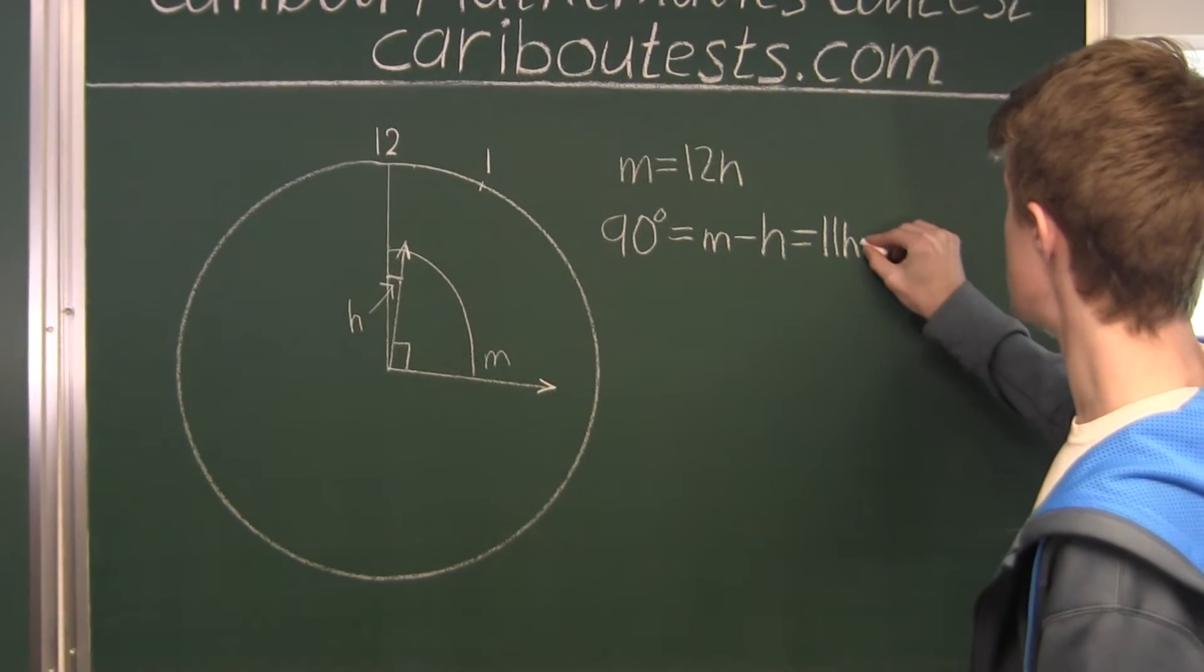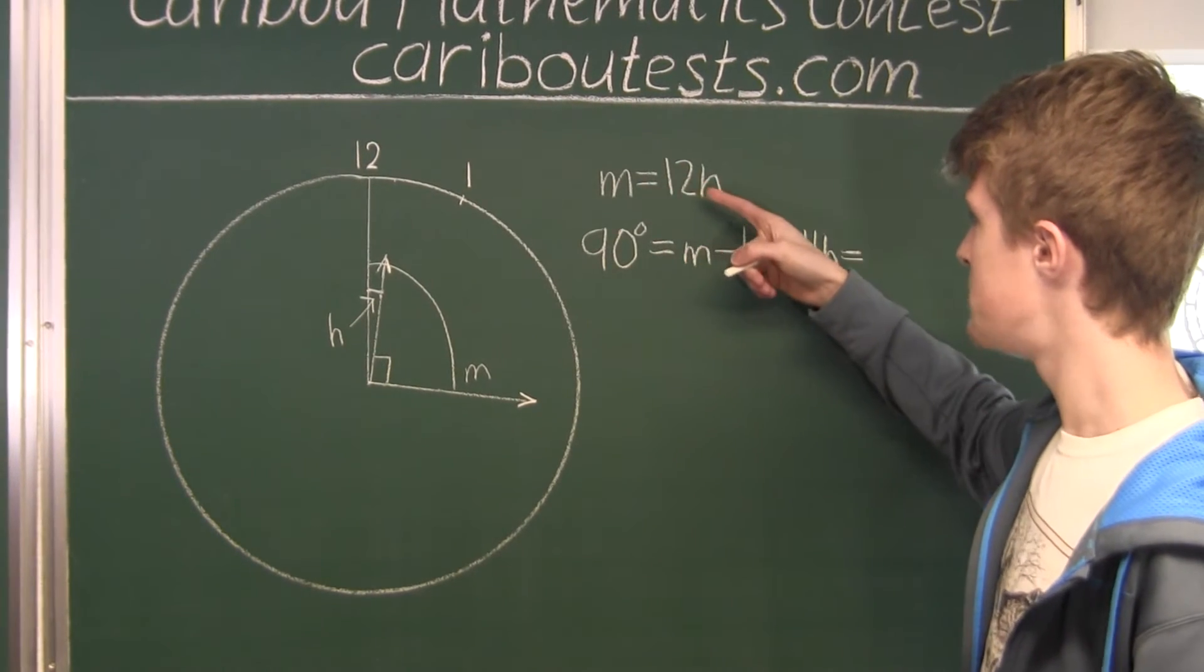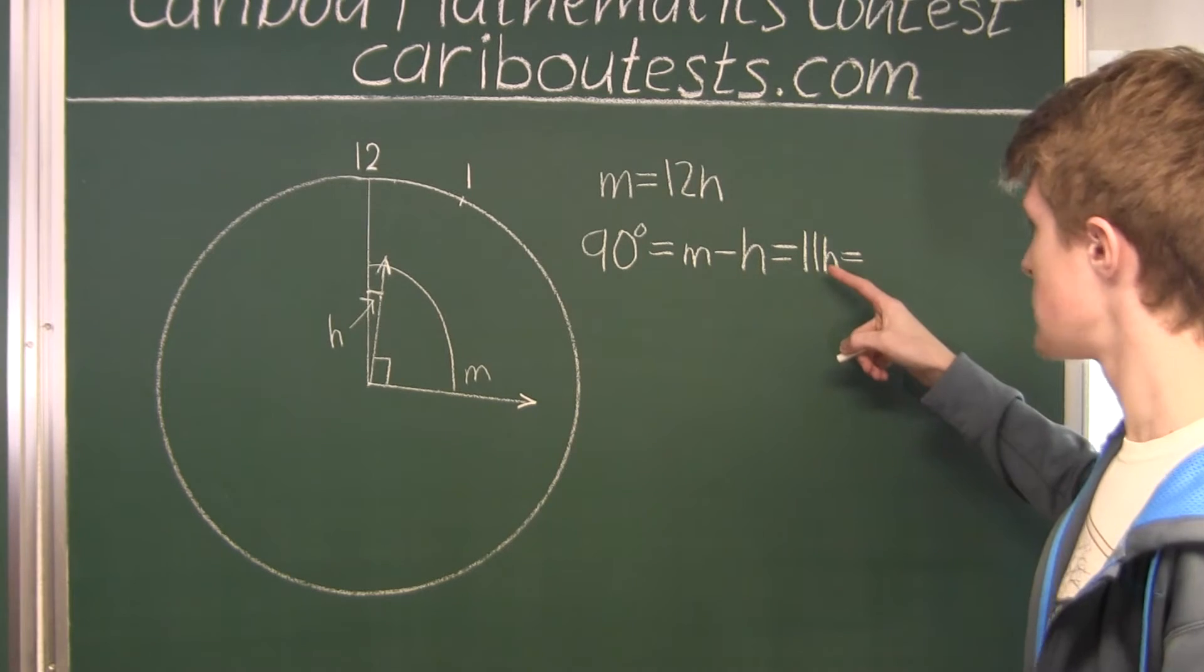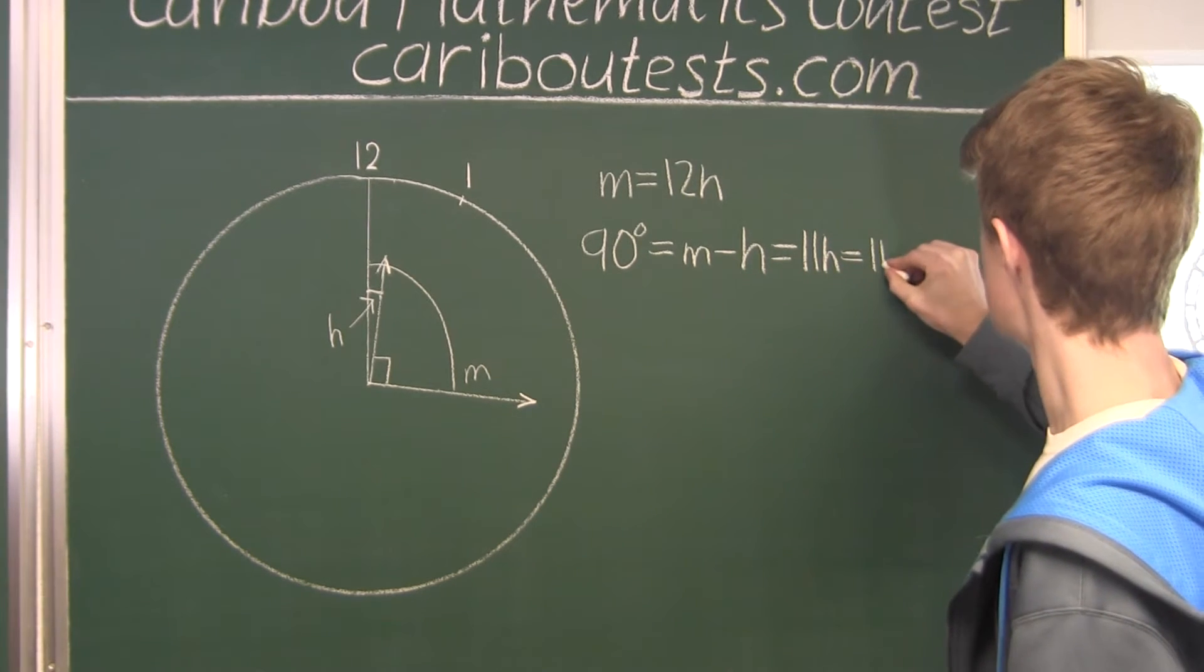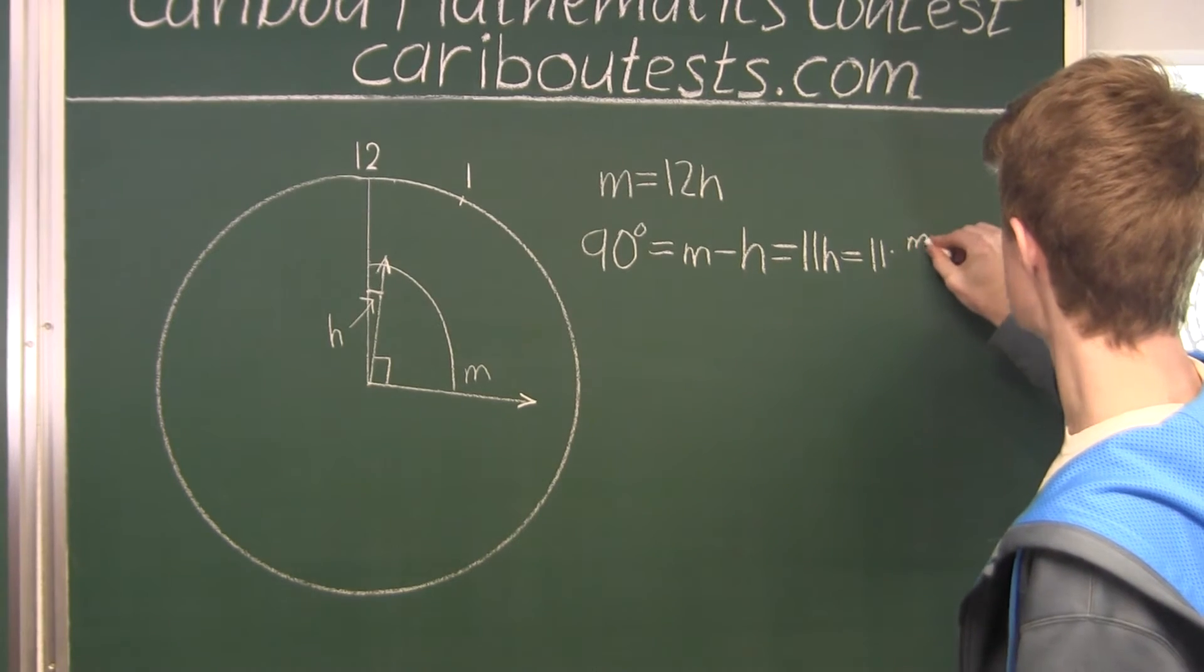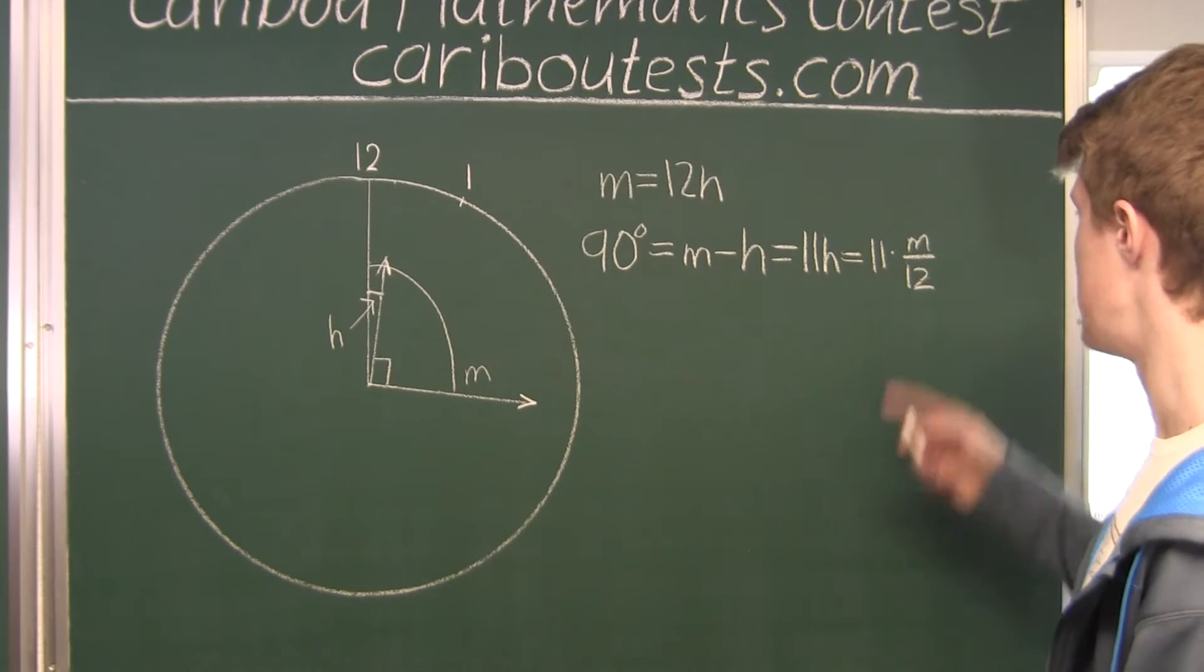And this is equal to, well, we know that H, if we divide both sides by twelve, would be M over twelve. So if we have 11H, that would be eleven times M over twelve.